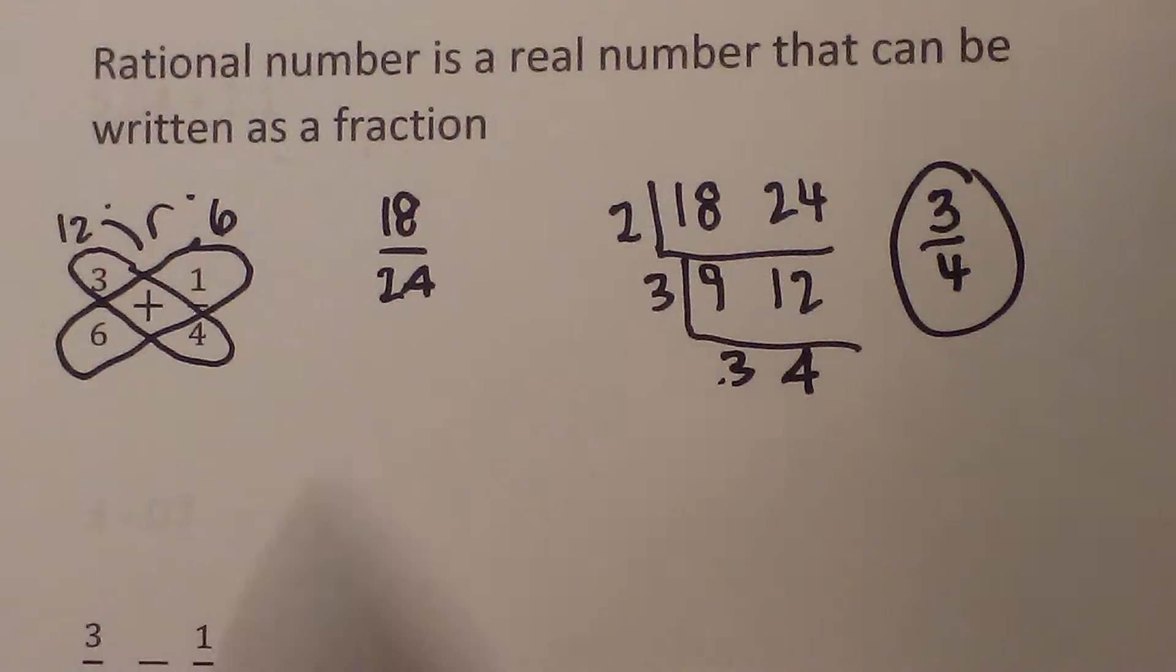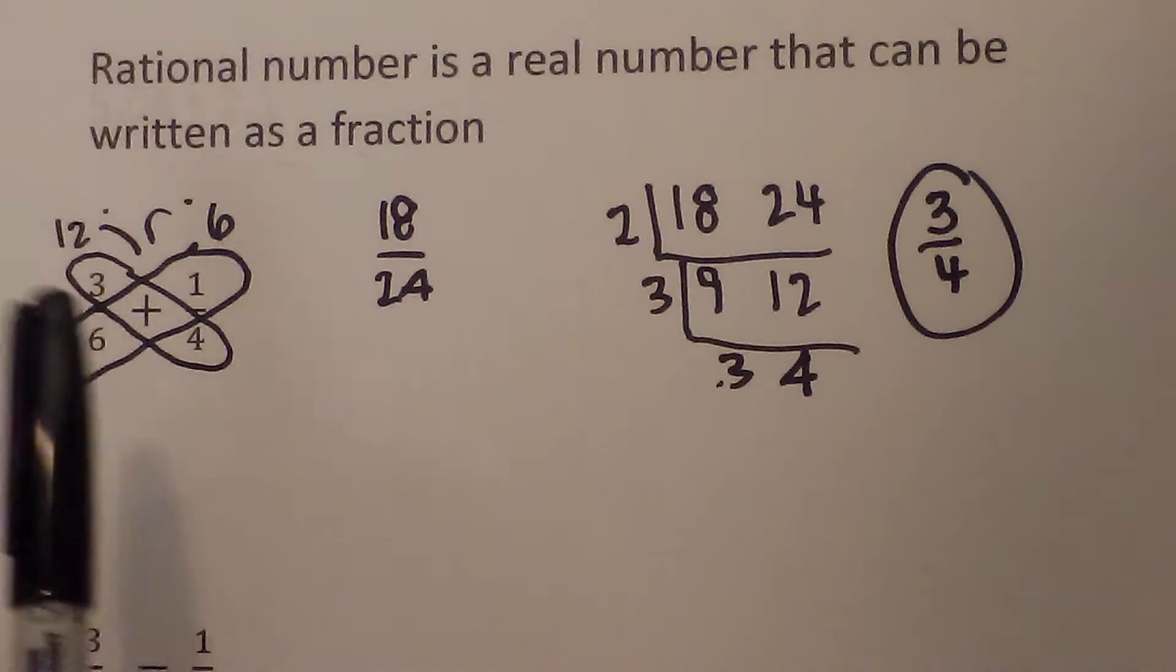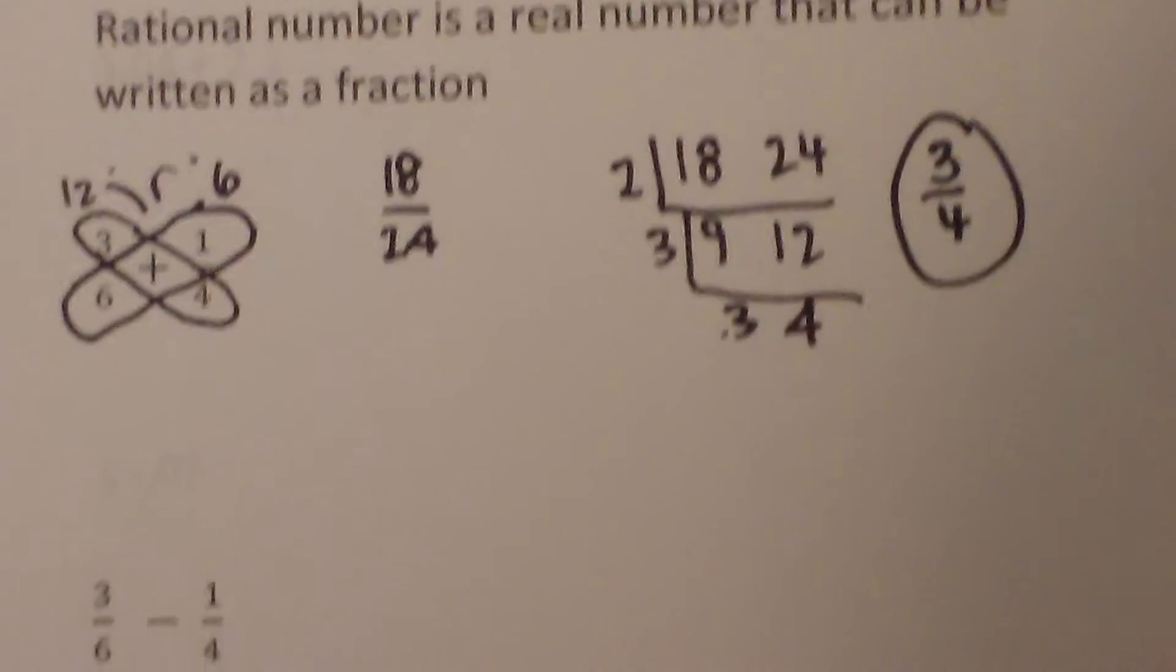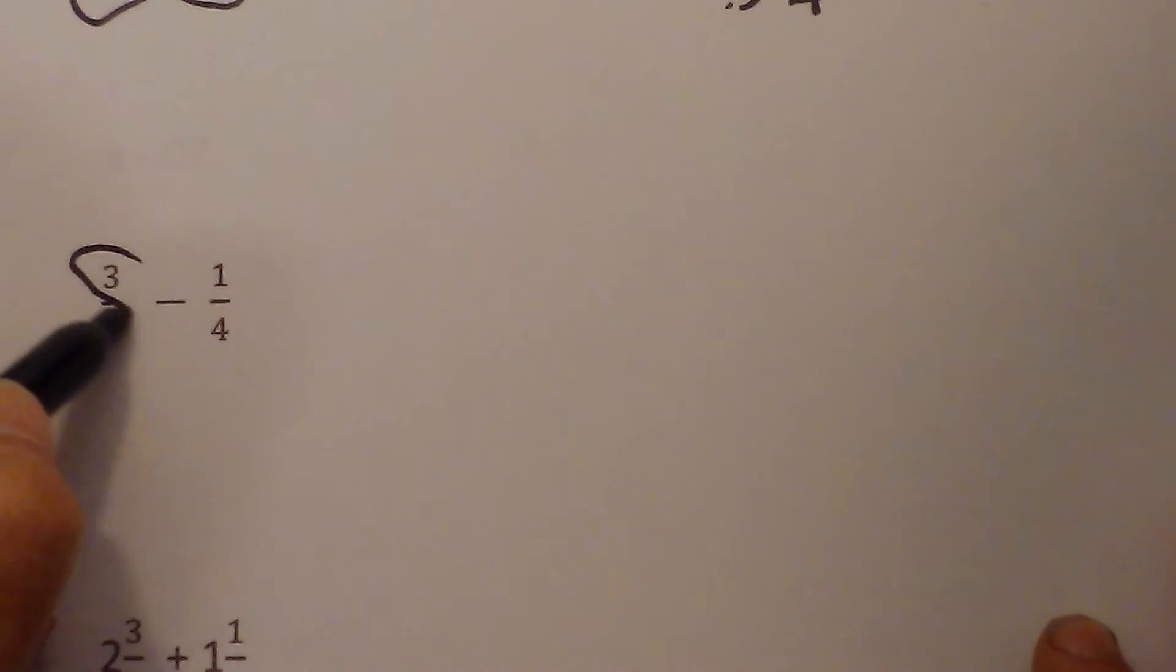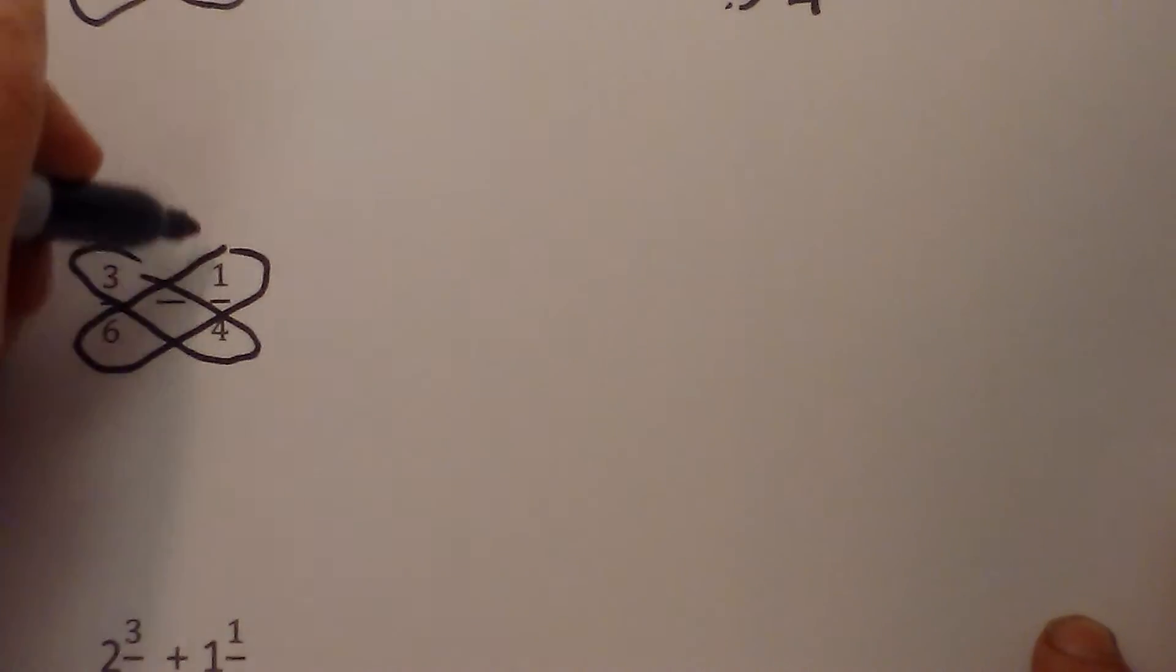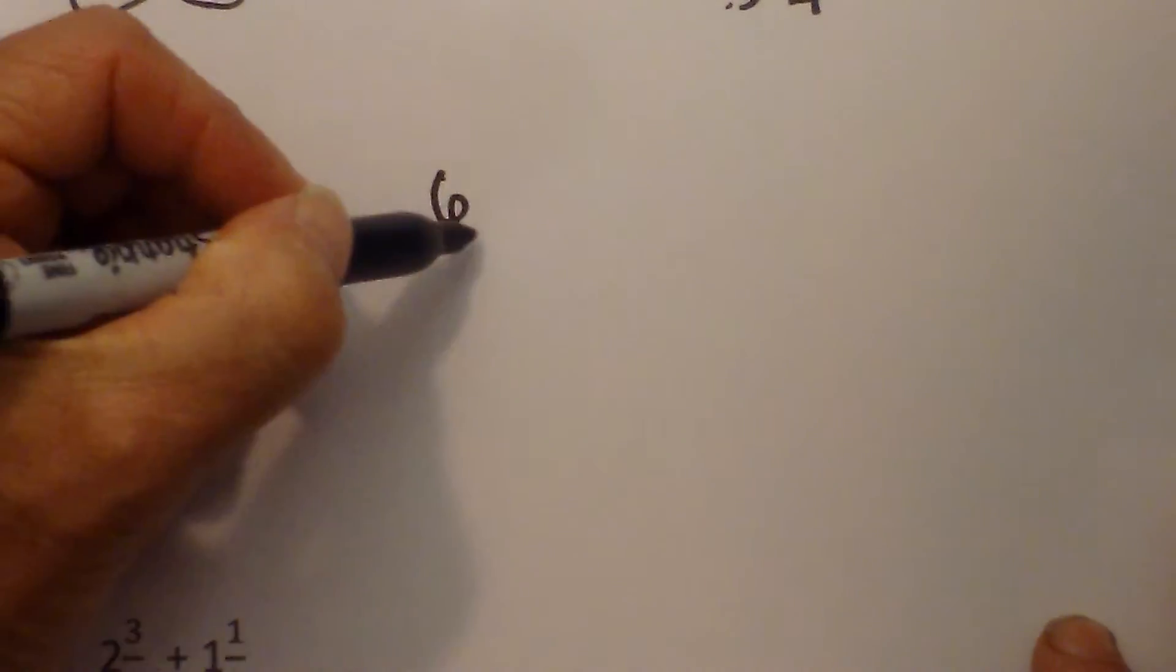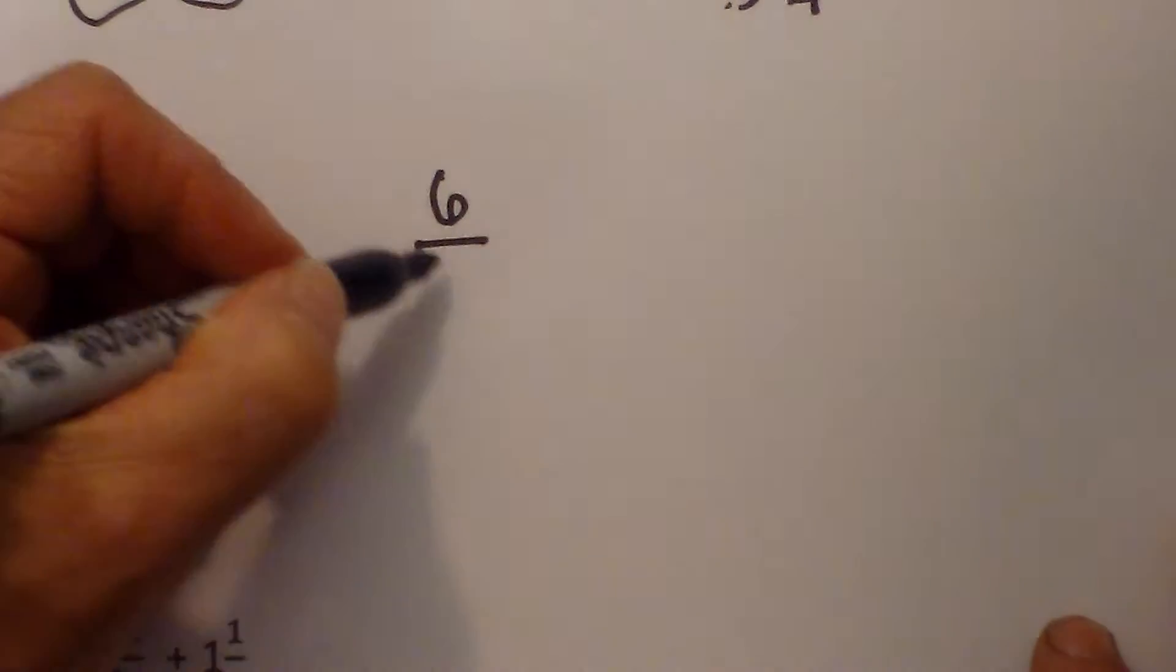So if you don't like finding a common denominator, you can use a combination of butterfly method and then the ladder method of simplifying. The same thing works whenever you have subtraction. Again I am going to do the butterfly method. This time 4 times 3 is 12, 6 times 1 is 6. Except this time I will subtract, so that becomes 6 over, and remember you multiply the bottom, 6 times 4 is 24.